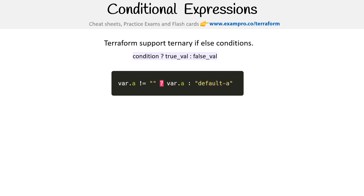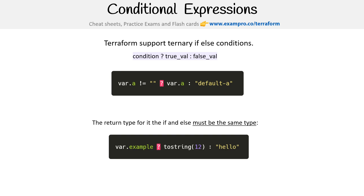The return type of the if and else must be the same type. So if you have a number in one branch and a string in the other, they have to match. Obviously, we want a string returned in both cases, so we'll use the built-in tostring function to convert the value to a string so we don't run into any problems.